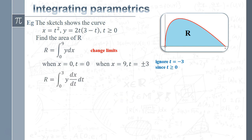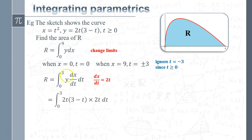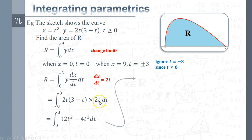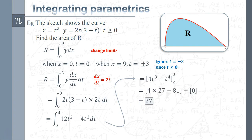Now we have our integral with dx replaced by (dx/dt)·dt. We find dx/dt by differentiating x = t², giving dx/dt = 2t. Putting the two bits together we get y·(dx/dt) = 2t(3 − t)·2t = 4t²(3 − t). Multiplying out gives a simple polynomial, which we integrate between t = 0 and t = 3. That gives us our area under the curve. The integration became really simple — it was just putting together the two bits: y times dx/dt.